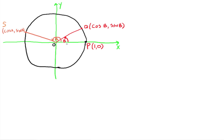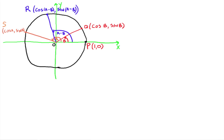Now we're going to put in a third angle — we go angle A, and then take B away. If this is angle B, we come all the way over to angle A and then come back angle B right inside here, and that gives us this new angle, called A minus B. That will give you a point on the unit circle that we're going to call R, and it has ordered pair (cos(A−B), sin(A−B)). This blue angle is angle A minus B.